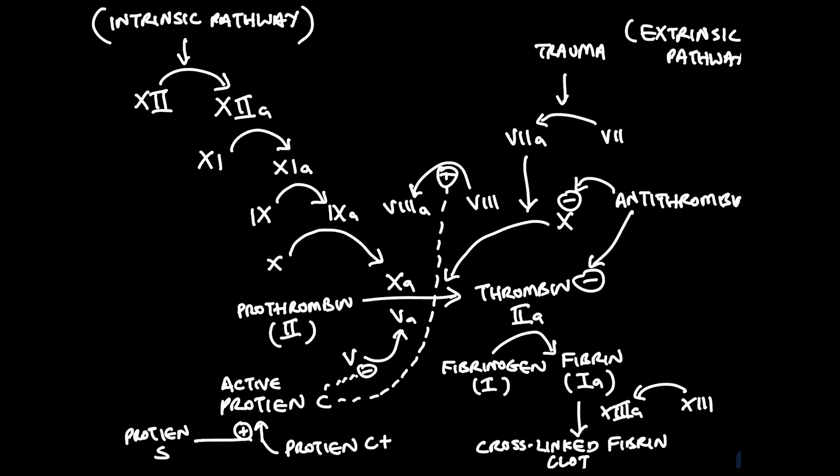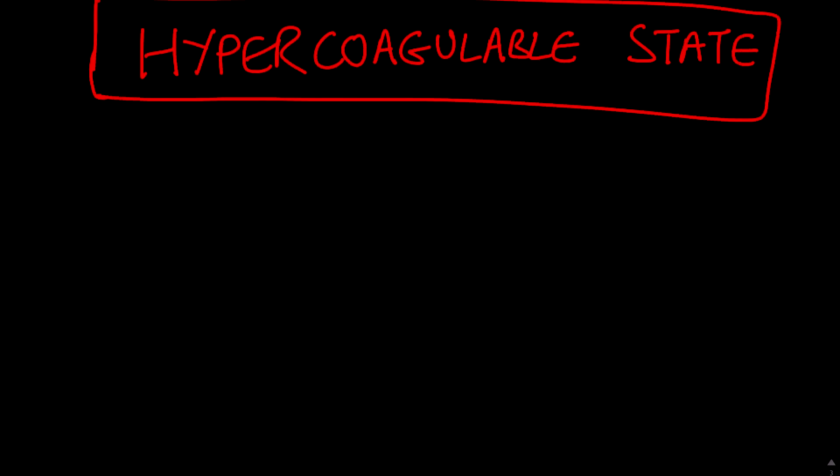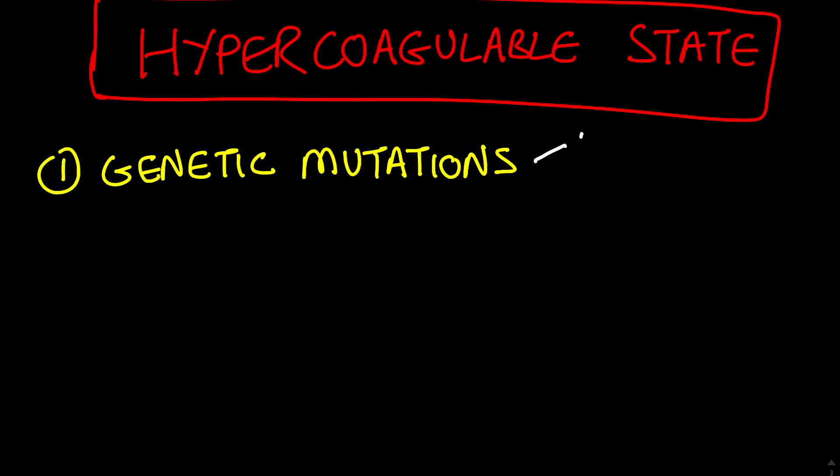Other mutations, such as defects in protein C, protein S, and antithrombin, account for most of the remaining cases. But just to be clear, the presence of these mutations does not mean that a clot will definitely happen. For instance, only five percent of patients with factor V Leiden will ever develop a blood clot. It's just that having these mutations confers an increased risk. We physicians refer to this condition of increased risk of clot formation as a hypercoagulable state. A genetic mutation affecting the coagulation cascade is one factor contributing to increased clot formation, but there are other scenarios that result in a hypercoagulable state as well.